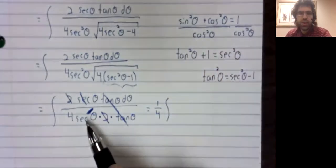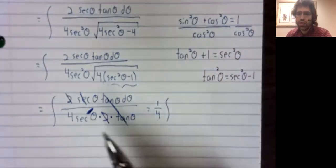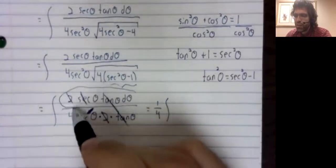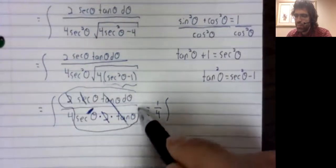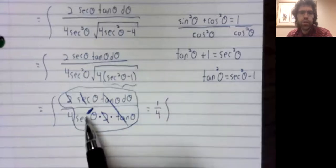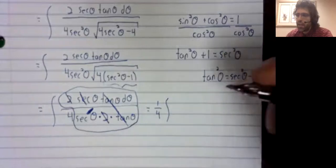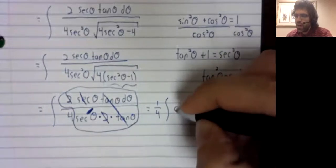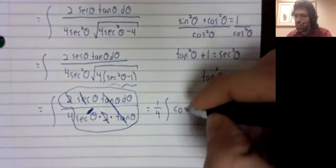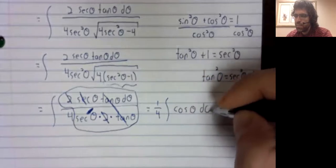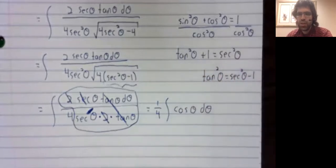The secant is one divided by the cosine. So what we have left here is one divided by the secant, which is the cosine.